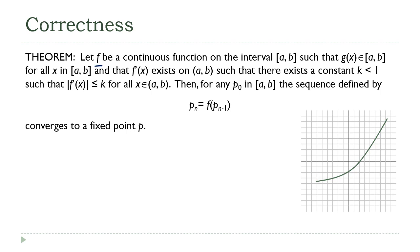First, we've got this function, and we're going to require that it has to be continuous — a pretty standard requirement. We also require the box criterion: our function has to stay inside a box on this interval. We require that the derivative exists, and here's the new part: there has to exist a constant less than one such that the derivative is less than or equal to that constant on the open interval. If all of these criteria are met, then for any starting point on that interval, the sequence we get by iterating over and over into f has to converge to a fixed point.